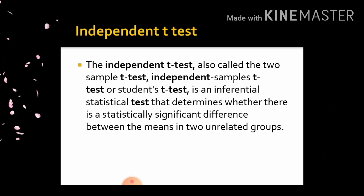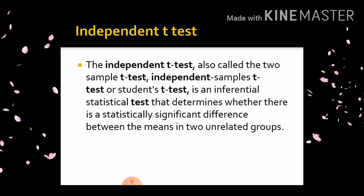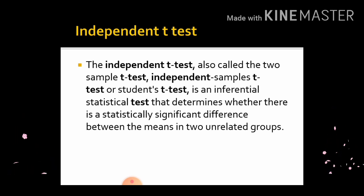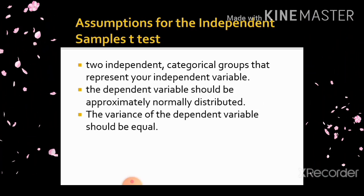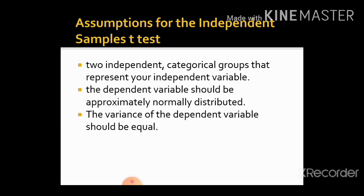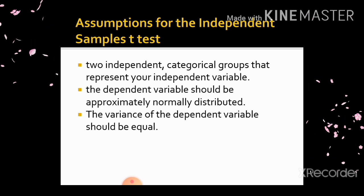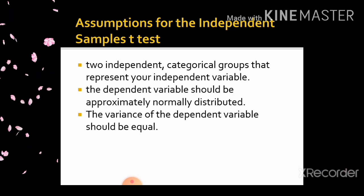In the Paired T-Test, we find the difference between the means in two related groups — or the same group compared before and after an intervention. For the Independent Sample T-Test, the assumptions are: two independent categorical groups representing your independent variable, the dependent variable should be approximately normally distributed, and the variance of the dependent variable should be equal.